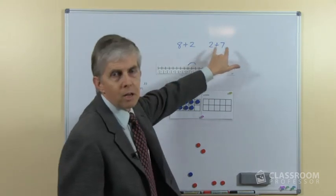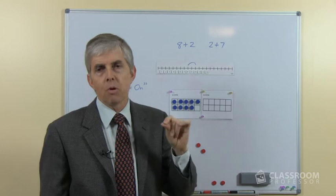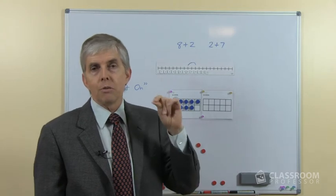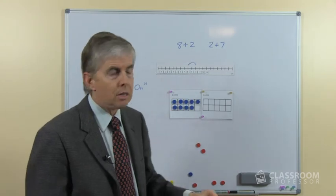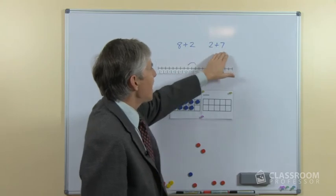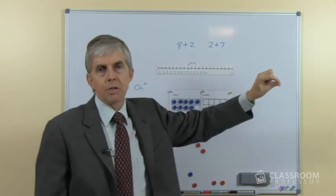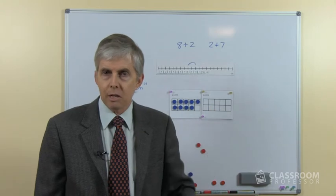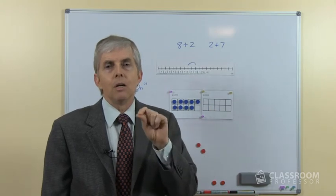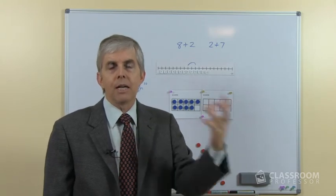We want them to learn that if we're going to count on, it will only be a small amount, and we'll start with the bigger of the two numbers. So if it's 2 plus 7 or 2 add 7, we're going to start with 7, then count on 2. So that's a part of this strategy, recognize that we will start with the largest and then count on.